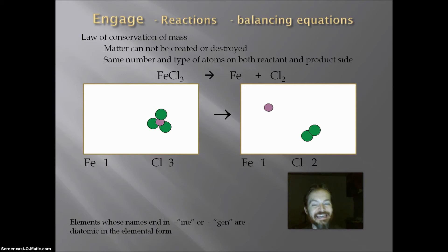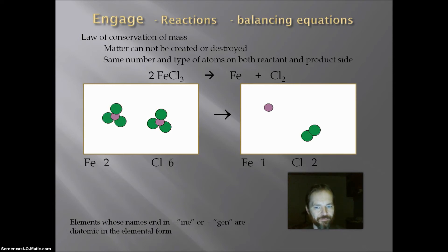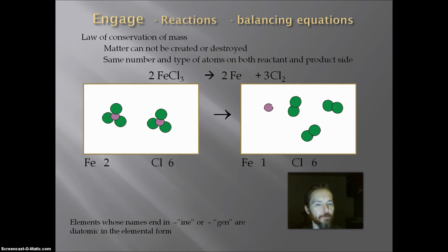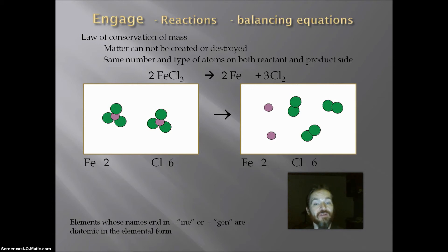So now I have to try to balance it. I have three chlorine on one side and two chlorine on the other, and the only way to get them equal is to find a least common multiple of six. To get six chlorine on the reactant side, I have to double my FeCl3, which gives me two iron and six chlorine. To get six chlorine on the product side, I need three Cl2s. Then I add one more iron on the product side, giving me two irons on each side and six chlorines on each side. This equation now follows the law of conservation of mass and is balanced.